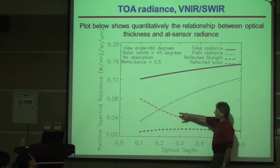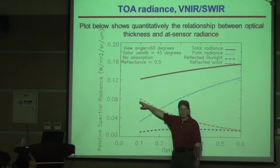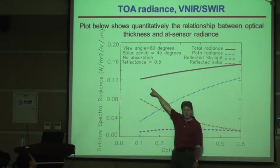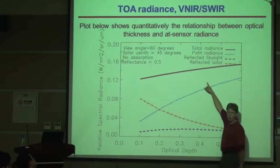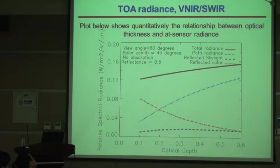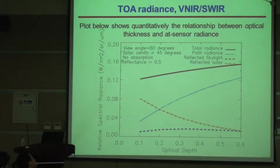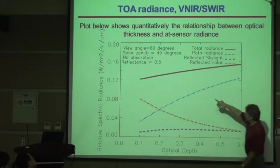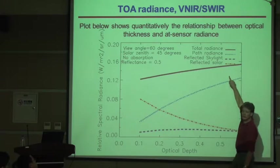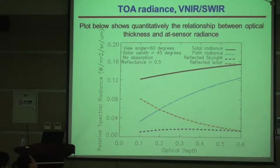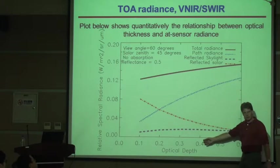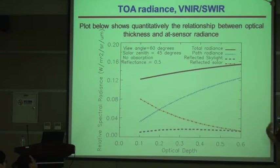So as you start to add material in the atmosphere and increase the optical depth, what happens to the total radiance out of the top of the atmosphere? Go up, go down, or stay the same? This line is slightly sloped upward, so the radiance out of the top of the atmosphere is increasing as we get an increase in optical thickness and introduce more material in the atmosphere.